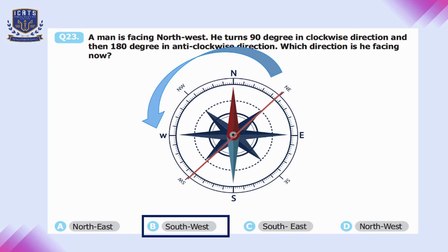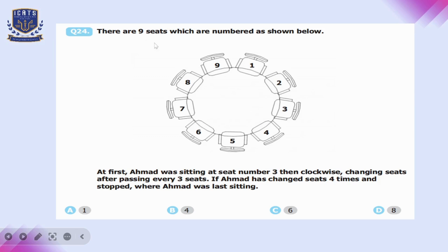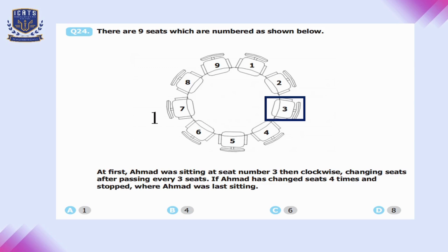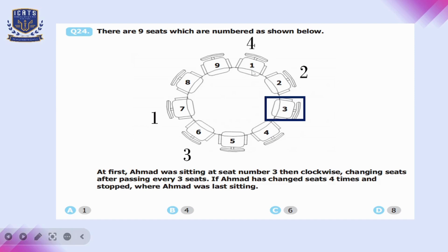Question number twenty-four: there are nine seats numbered in a circle. Ahmad starts at seat 3 and moves clockwise, skipping three seats each time. After the first change he is at seat 7, then seat 2, then seat 6, and finally seat 1 after four changes. So option A is correct.